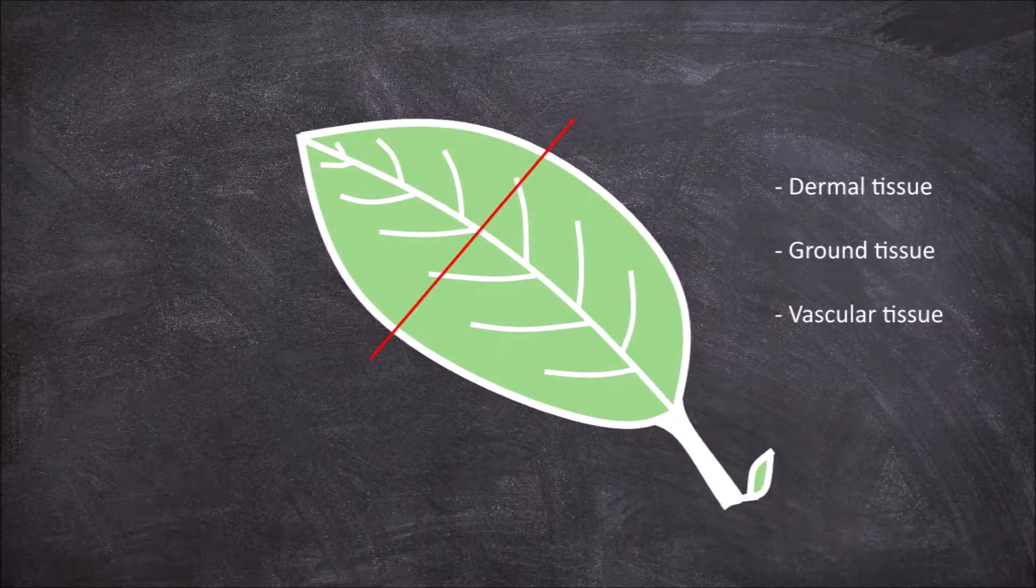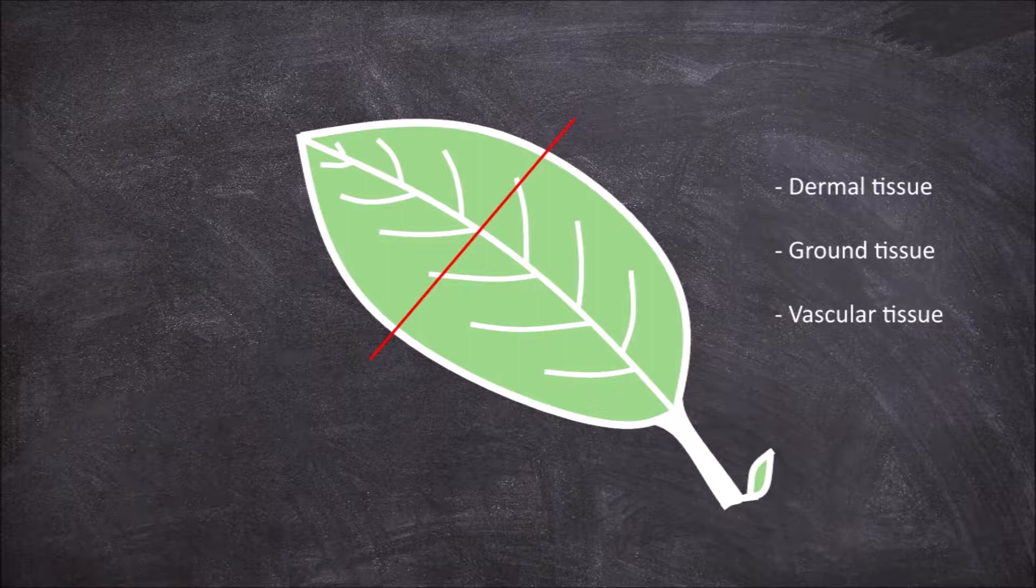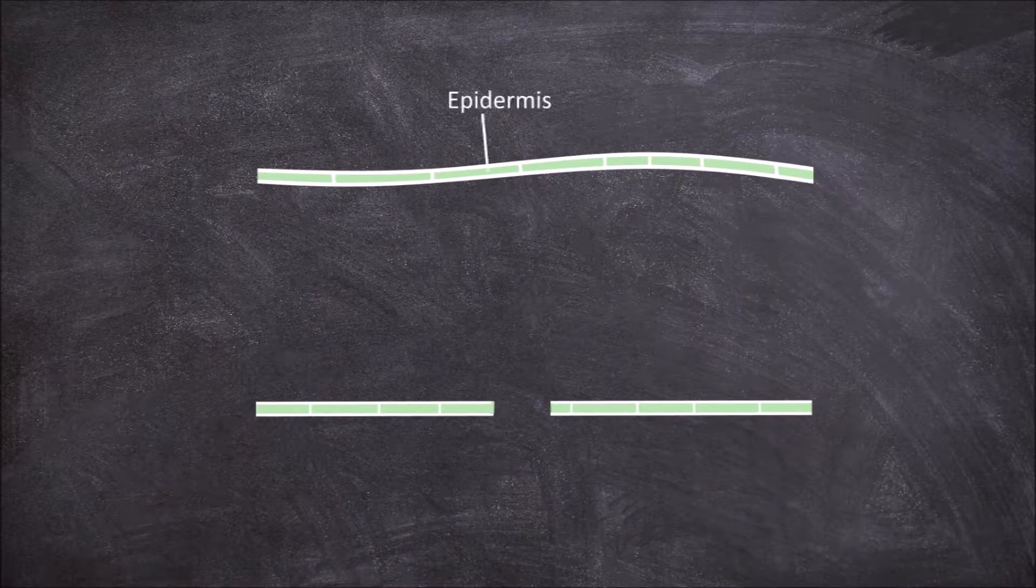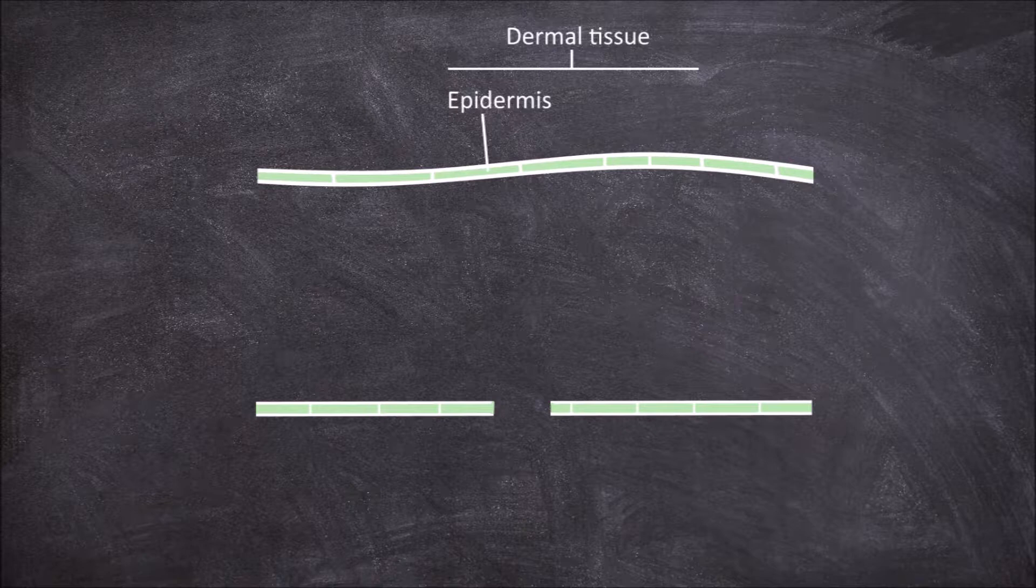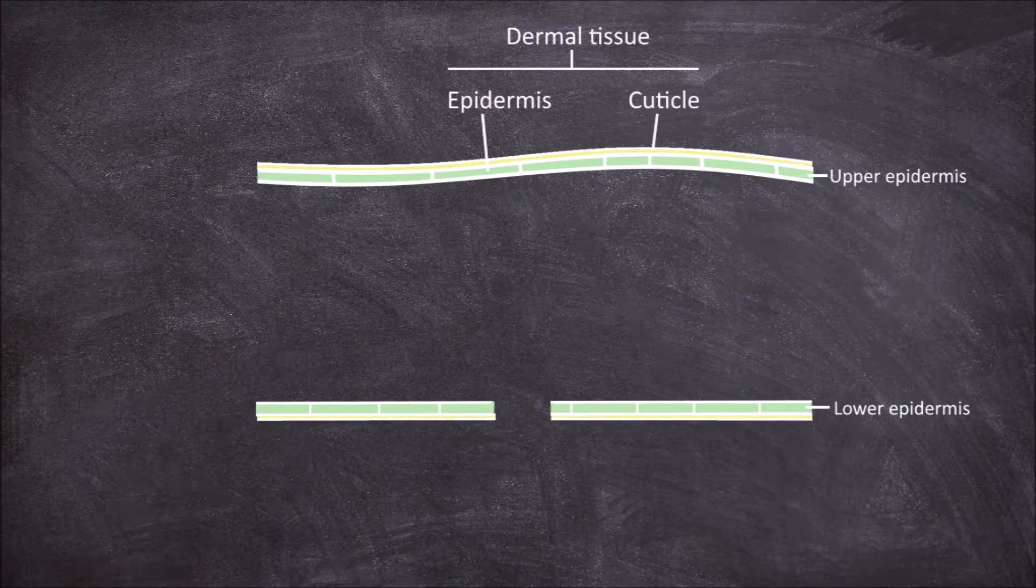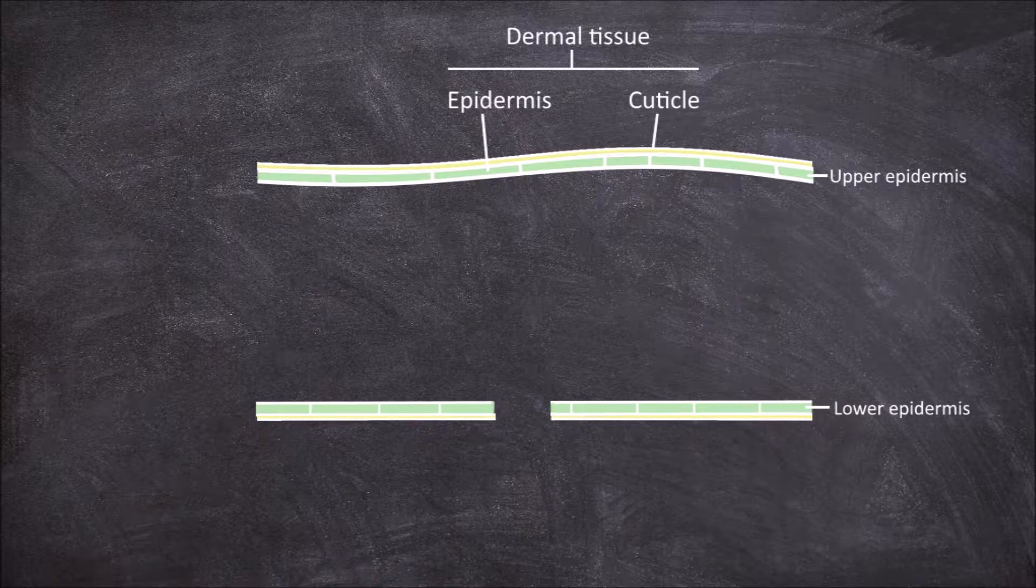If we take a cross section across the leaf, we will find the outer layer consists of the epidermis—this is the dermal tissue. The epidermis is found on both the upper and lower surfaces of the leaf and are called the lower and upper epidermis. The epidermis secretes a thick cuticle layer which acts in protecting the leaf from drying out.